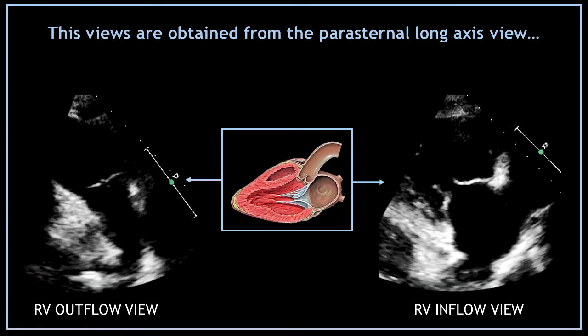The right ventricular outflow view and the right ventricular inflow view both are obtained from the parasternal long axis view. I already have a video on my channel showing you how to obtain these views step by step, so I'm going to leave the link in the comment section.